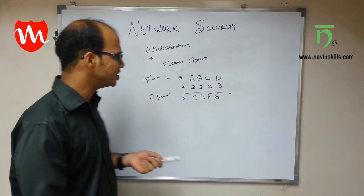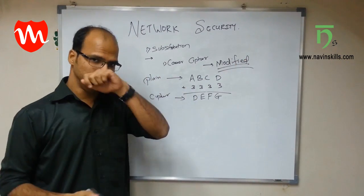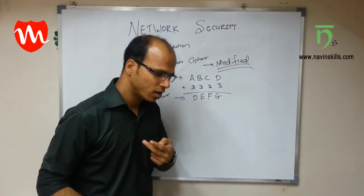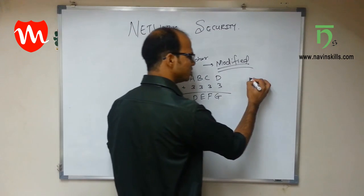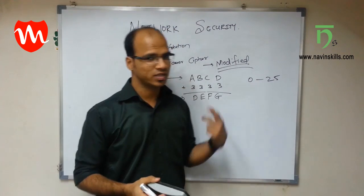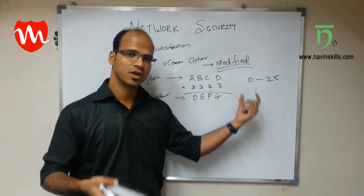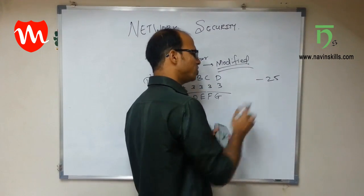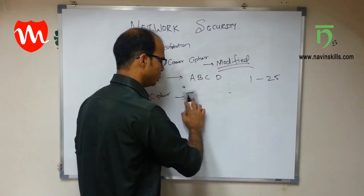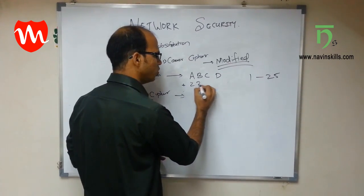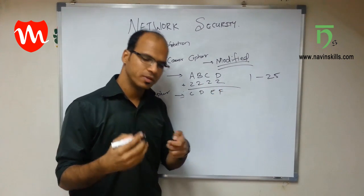To make it more difficult, we can use the modified version of Caesar Cipher. Instead of always adding 3, you can add any number. You can add 5, 20, 25, 2, or 3. The number can range from 1 to 25 — because if you add 26, you get the same character back, and if you add 0, you get the plain text. So the valid key range is 1 to 25. For example, instead of adding 3, if you add 2, you get a shifted ciphertext like C, D, E, L — making it more difficult for the hacker.